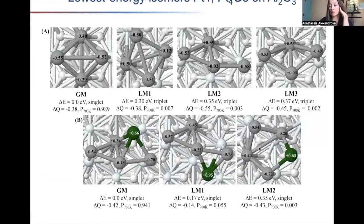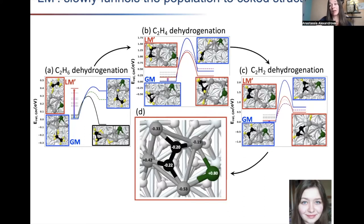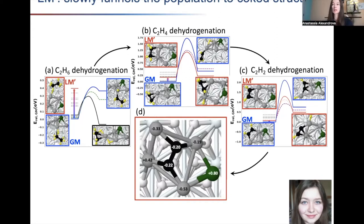Looking at Pt4Ge — various local minima, different accessibility, very similar amounts of charge transfer from the alumina support. Pt4Ge can easily dehydrogenate ethane — there are many accessible reaction profiles. We single out LM prime (here called LM2), and its proximity to the global minimum changes depending on what's bound to it. For ethylene, most reaction profiles from these clusters are too uphill to dehydrogenate — but LM prime, which is strongly pulled down in energy when it binds ethylene in di-sigma mode, has an accessible barrier for dehydrogenation.